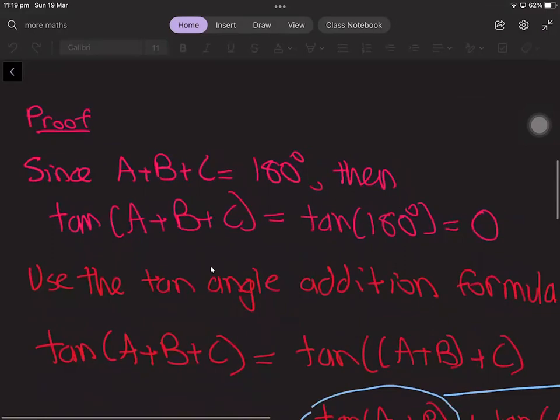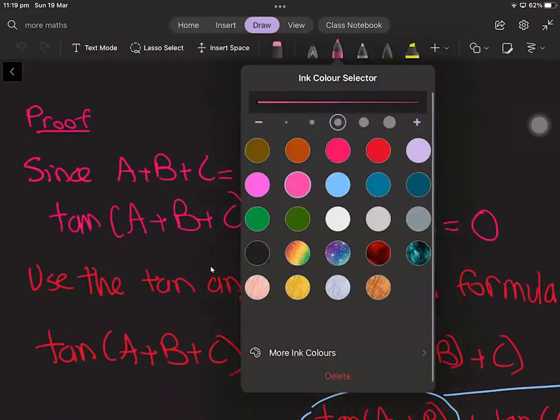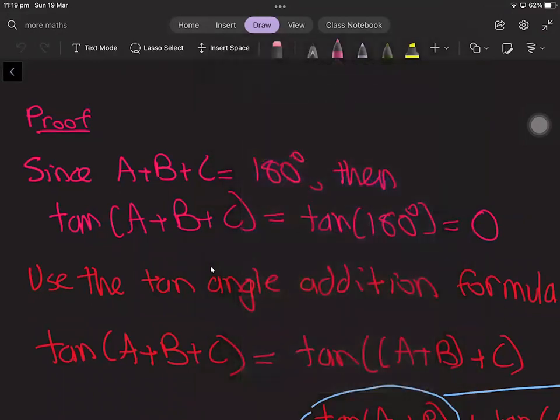So we know in a triangle that the angle sum A + B + C is 180 degrees, and this means we can write tan(A + B + C) as tan(180 degrees), and tan(180 degrees) is equal to zero.